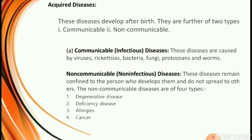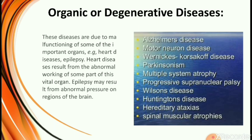Non-communicable diseases are further classified into four types: degenerative diseases, deficiency diseases, allergies, and cancer. Degenerative diseases are also called organic diseases. These diseases are due to the malfunctioning of some important organs, such as heart disease and epilepsy.